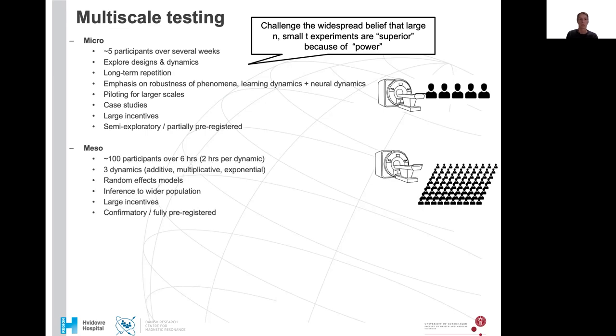But we also want to test at a mesa scale again in the MR scanner, about 100 participants over six hours, two hours per dynamic with breaks in between that would come in on multiple days. We would want to test the three dynamics I just mentioned. This would allow us to really use random effects models to see whether variability is between subjects and what is within the subject. It would allow us inference to wider population. We could again use large incentives and this would be confirmatory and fully pre-registered, both the code and the hypotheses.